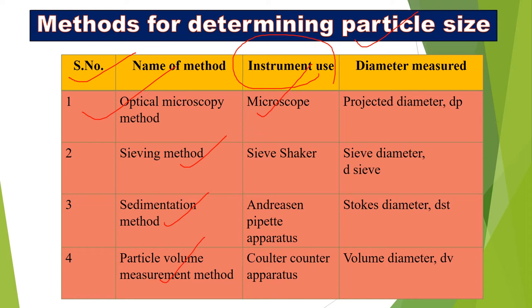The corresponding instruments are: for optical microscopy we use a microscope, for sieving we use a sieve shaker, for sedimentation we use a sedimentation method instrument, and for particle volume measurement we use the Coulter counter apparatus.